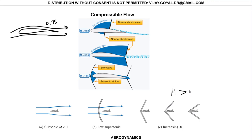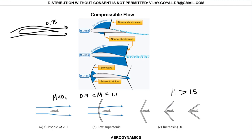So this example is typically bigger than Mach 1.5, this would be around Mach 5, this might be anywhere between Mach 0.99 and 1.1, and this is a Mach number less than about 0.8. That's a typical compressible flow illustration.